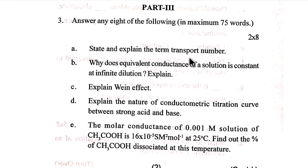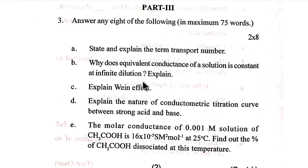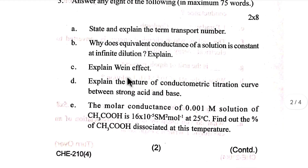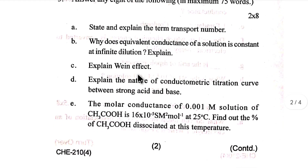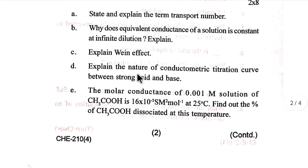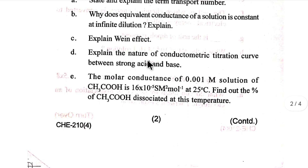Number three: State and explain the term transport number. Why does equivalent conductance of a solution become constant at infinite dilution? Explain the Wien effect. Explain the nature of the conductometric titration curve between a strong acid and a base.